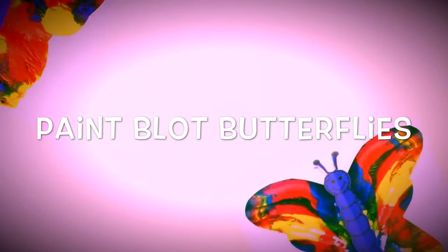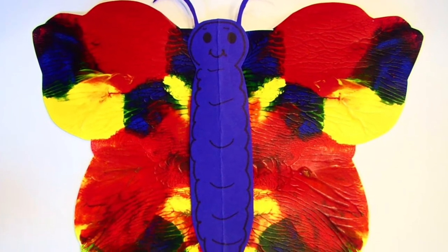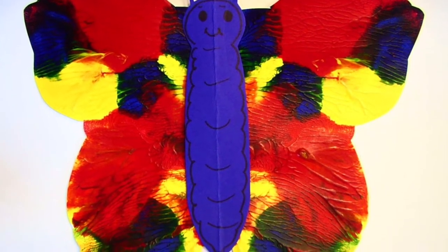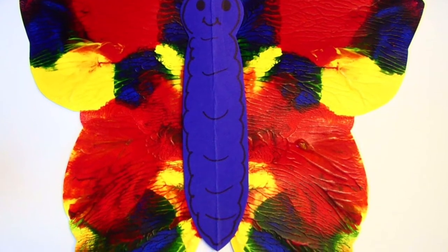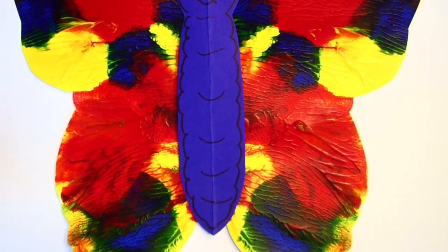How to make symmetrical paint blot butterflies. Symmetry is when an object looks the exact same on one side as the other. One half of the object looks like a mirror image of the other half. An example would be a butterfly.